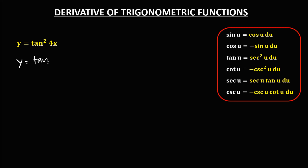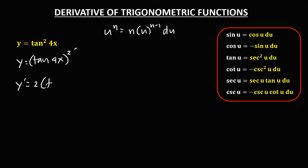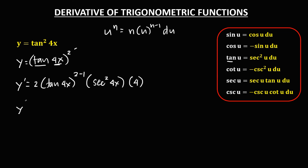Then for this given, first we need to rewrite this as tangent 4x to the power 2. Then using the chain rule, u to the power n equals n times u to the power n minus 1 times the derivative of u. So y prime equals n, that's 2, then tangent 4x to the power 2 minus 1, times the derivative of tangent, that's secant squared u, and u is 4x, times the derivative of 4x, that's 4. Then simplify: 2 times 4 is 8, then tangent 4x times secant squared 4x.